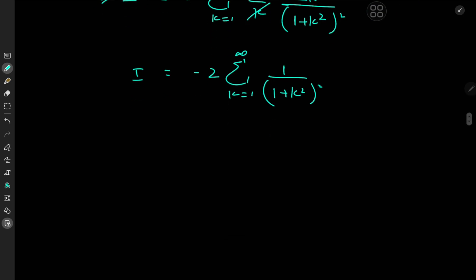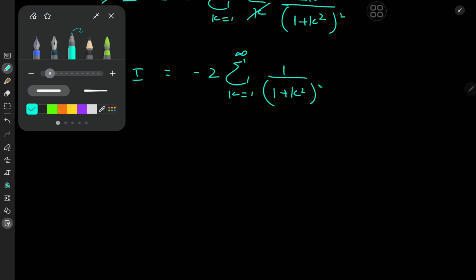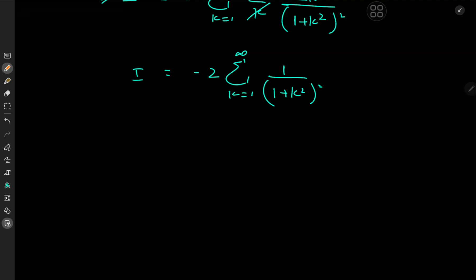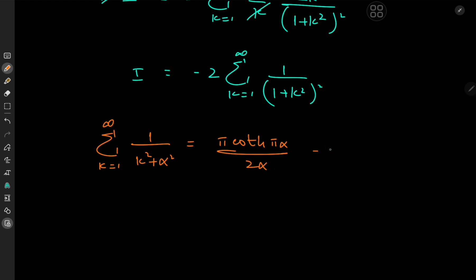Now, how exactly are we supposed to do that? Well, there's a really cool infinite series result I derived a while back — I'll link that in the description — that the sum over k from 1 to infinity of 1 over (k squared plus alpha squared) equals pi times the hyperbolic cotangent of (pi * alpha) over (2 * alpha), minus 1 over (2 * alpha squared). I think I proved this using complex analysis, and I'll link the proof video in the description box.